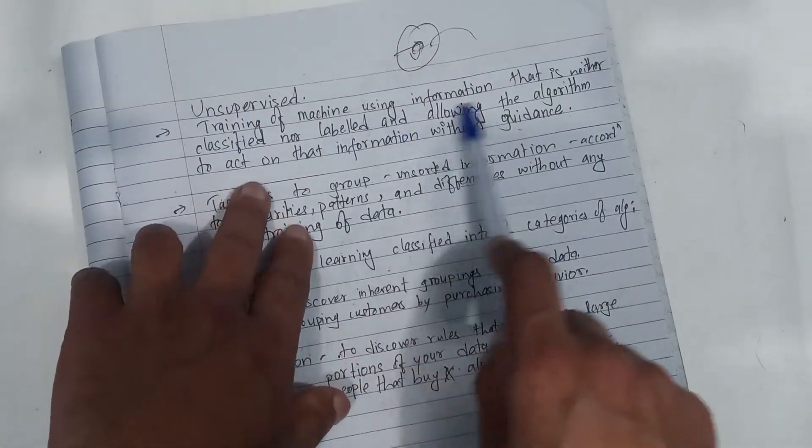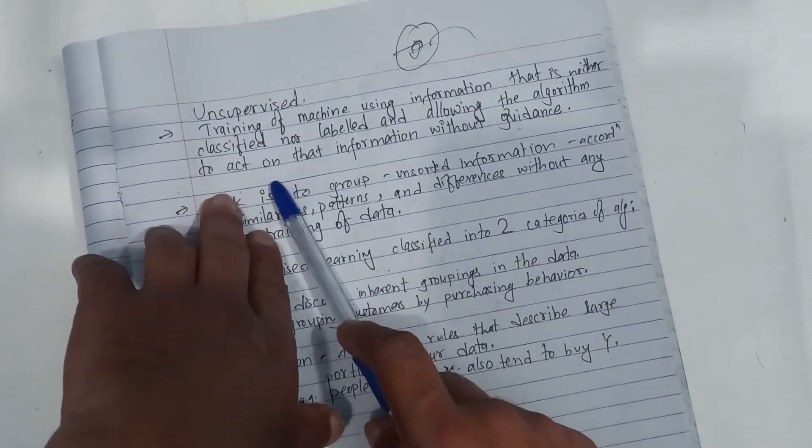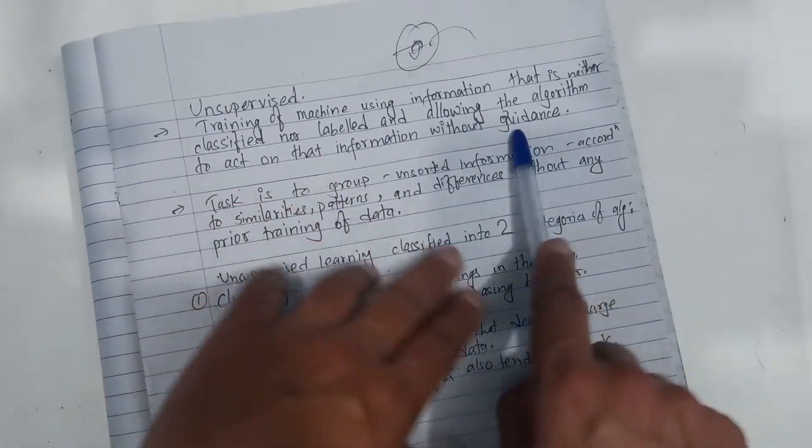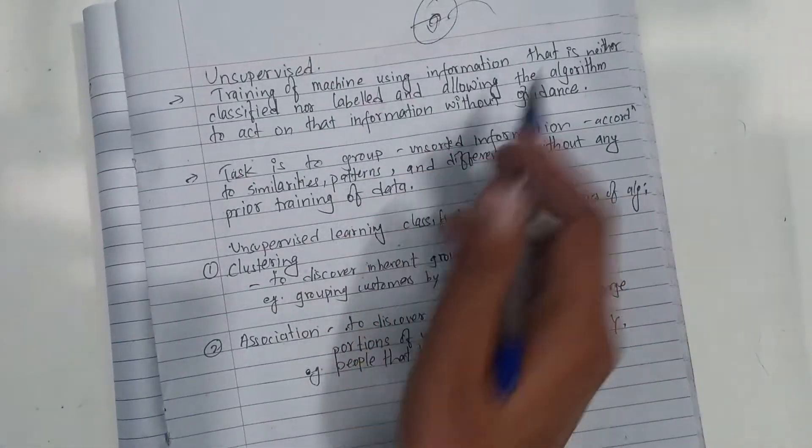Training of machine using information that is neither classified nor labeled, allowing the algorithm to act on the information without guidance. Without that information, we can train the data.